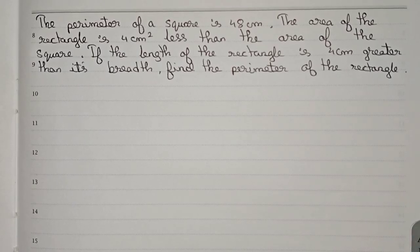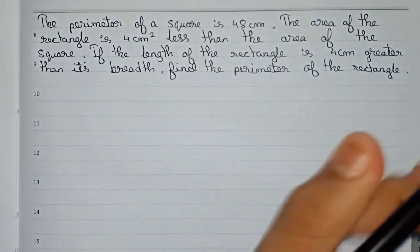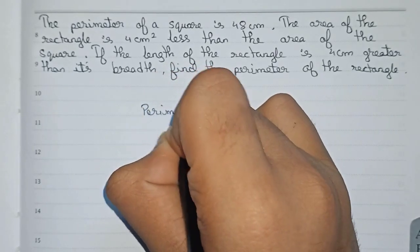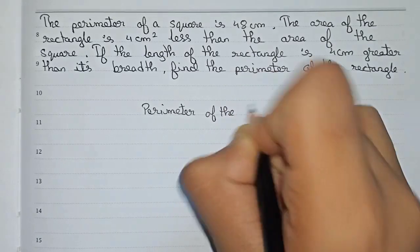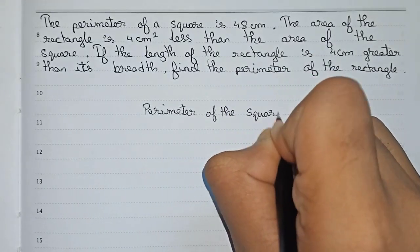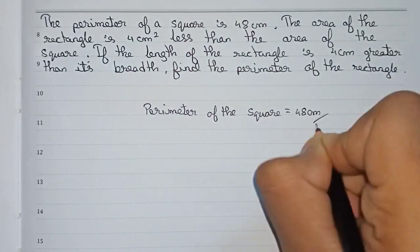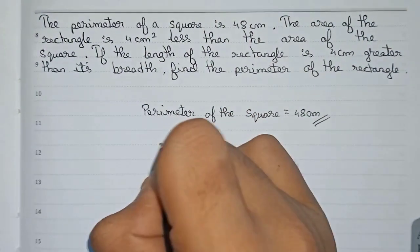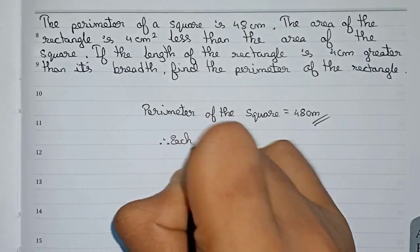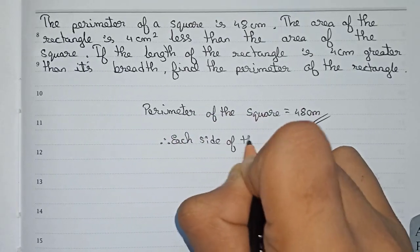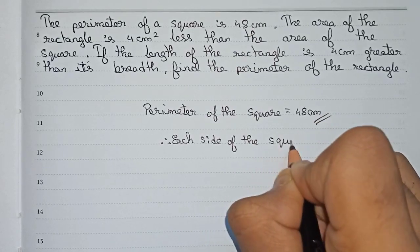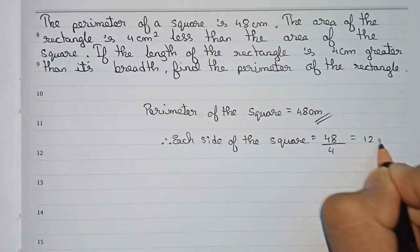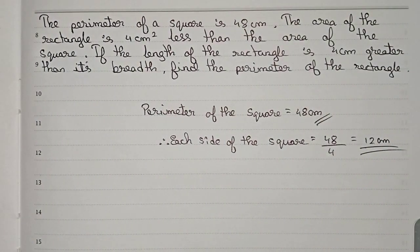So first, it is given that the perimeter of the square is 48 centimeters. From this we can find out each side of the square. Each side of the square is equal to perimeter divided by 4, that will be 48 by 4, so 12 centimeters. This is the each side of the square.